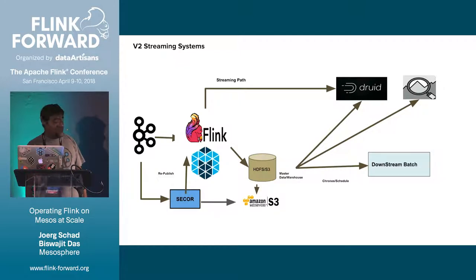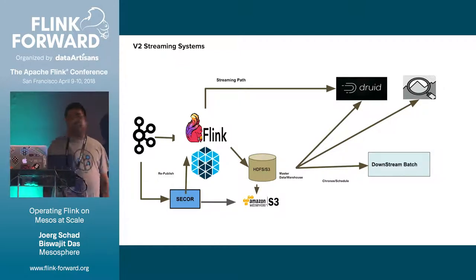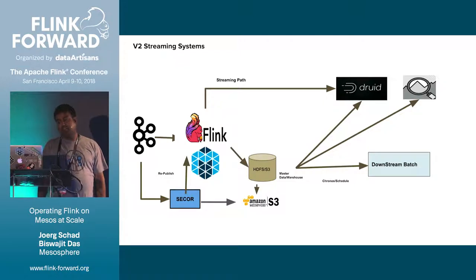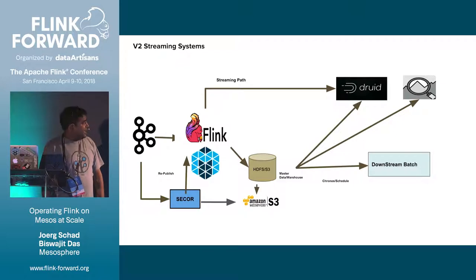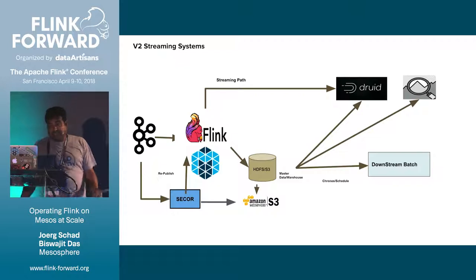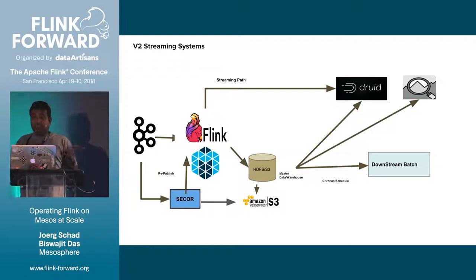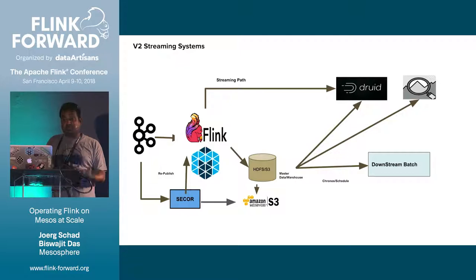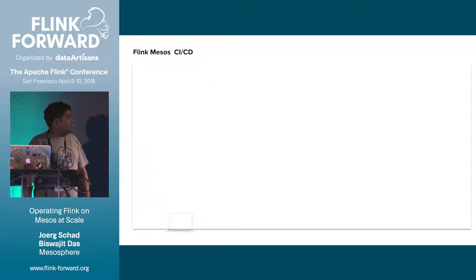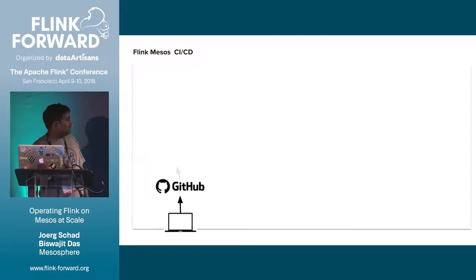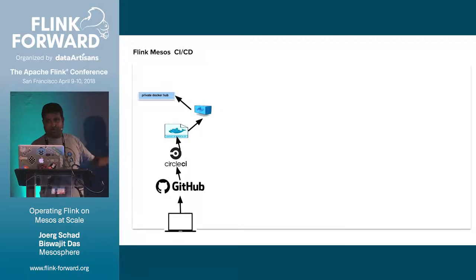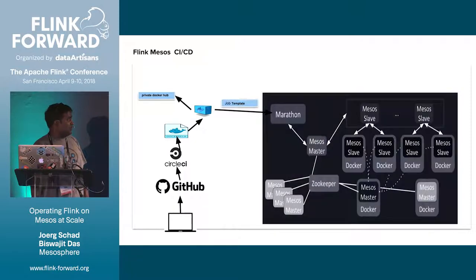Deployment-wise, we run our entire Flink infrastructure — around 40 streaming jobs — on Apache Mesos. All deployments are done through CI/CD with a template-based mechanism. Based on the job, we define a template specifying parallelism and resource requirements. The deployment workflow: merge to Git, CircleCI runs, creates a container with our private repo, and then that template deploys to Mesos.